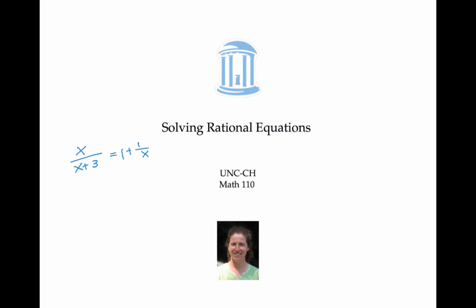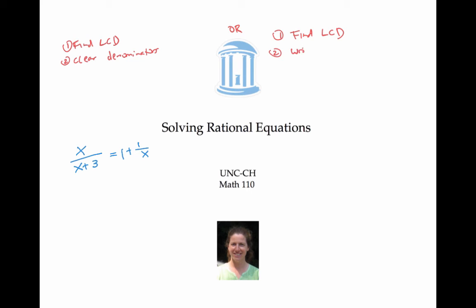In this video, we solved a couple of rational equations using the method of finding the least common denominator and then clearing the denominator. We cleared the denominator by multiplying both sides of the equation by the least common denominator, or equivalently multiplying each of the terms by that denominator. There's another equivalent method that some people prefer — it still starts out the same, we find the least common denominator, but then we write all the fractions over that least common denominator.